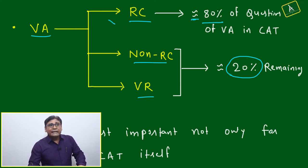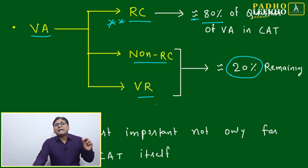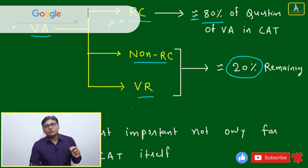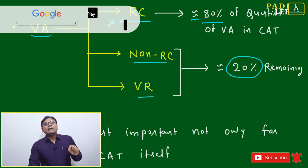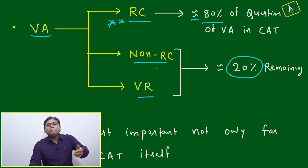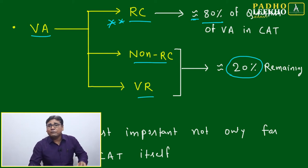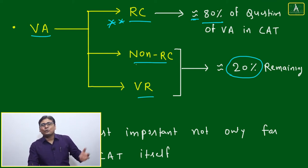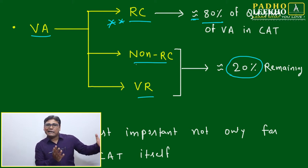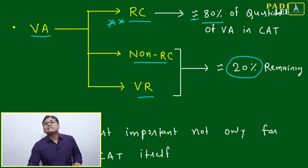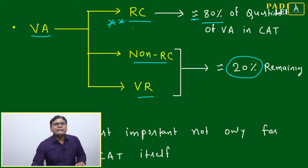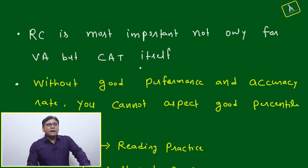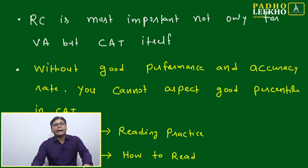Do not take RC lightly. Many math and science background engineering students are a little weak in the verbal area and do not put genuine effort to improve their Verbal Ability or RC. You have to put in effort. Don't think that doing well in Quant and DI will compensate. You have to improve your reading speed and take a lot of practice sessions for reading.